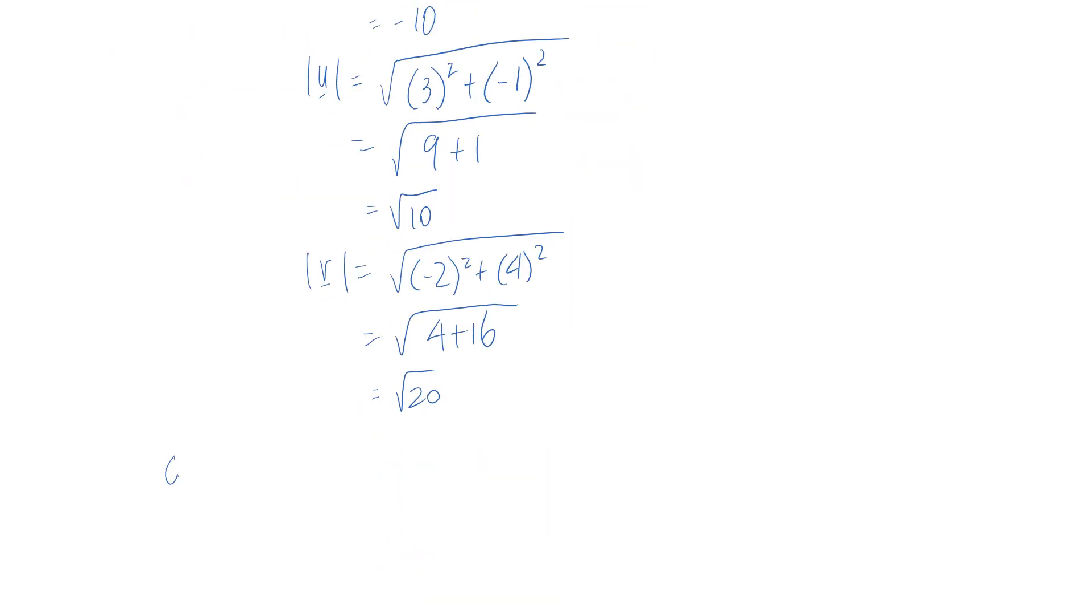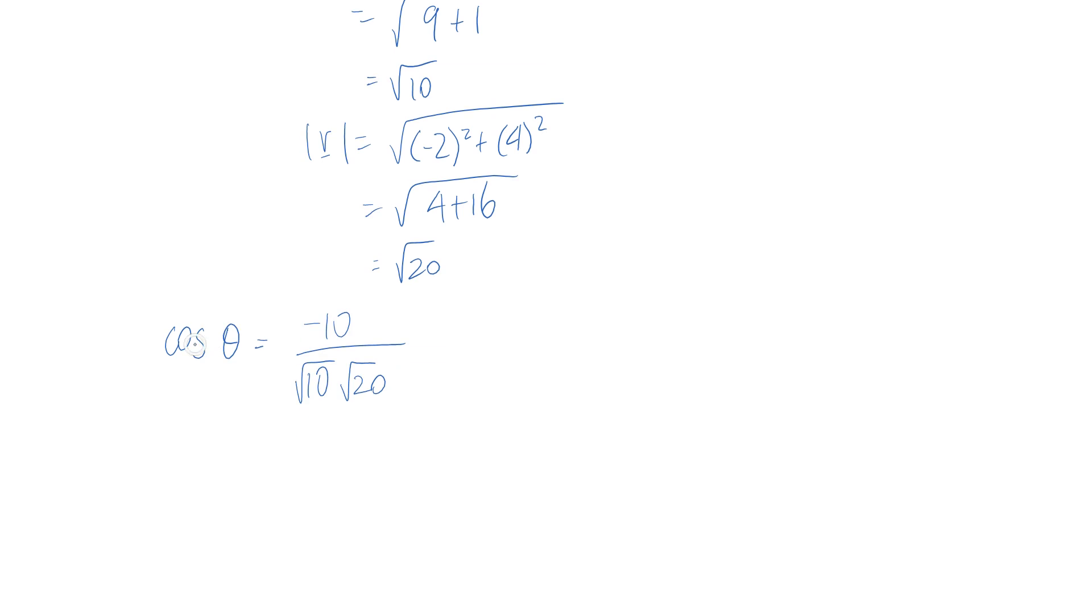So cos of theta is going to be equal to the dot product which we found to be this negative 10 divided by our magnitudes multiplied together on the bottom line. So if we want to undo a cos we need to do the cos inverse or arc cos to the other side. And we pop that into a calculator and the answer we come out with is 135 degrees.